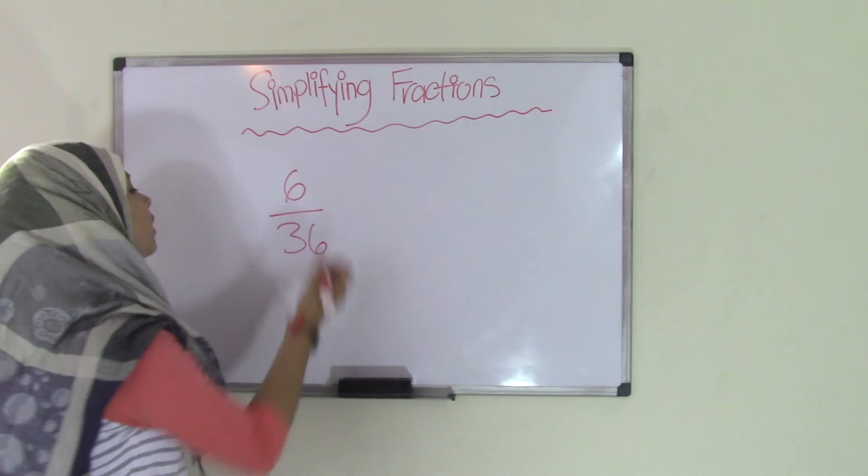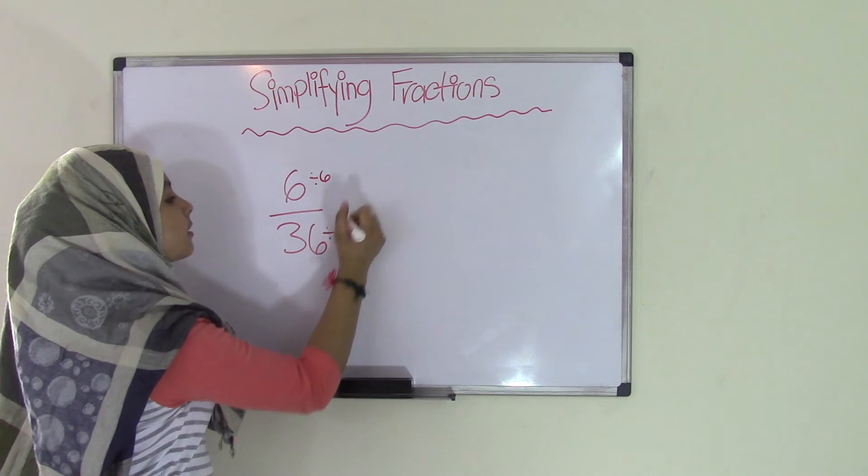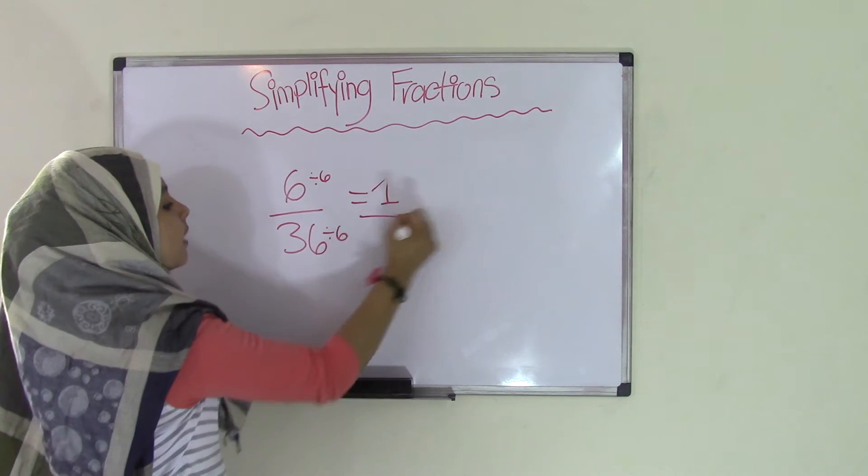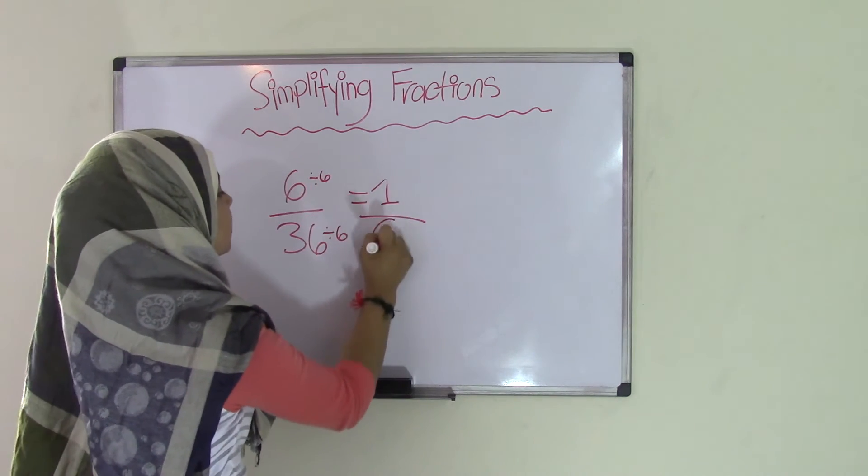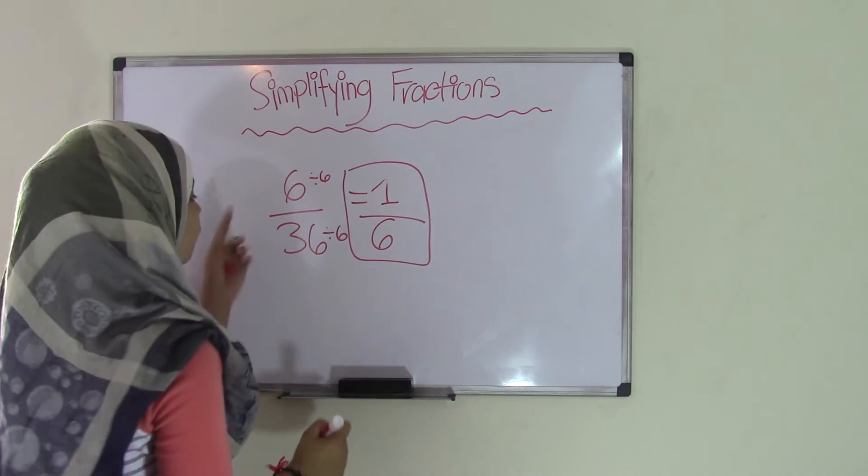So this is really simple so we know if you divide 6 by 6 and 36 by 6 we will get 6 divided by 6 is 1 and 36 divided by 6 is 6. That means 1/6 is the simplified terms for 6 over 36.